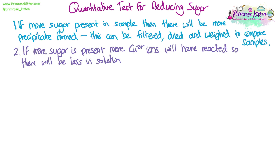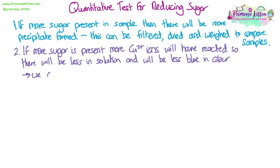The second way is to look at the change in colour of the Benedict's solution. So if more sugar is present then more copper ions will have reacted, so there will be less of them in the solution, which means the solution will be less blue. So we can use a colorimeter to detect this colour change that would be too subtle for us to look at with our own eyes.